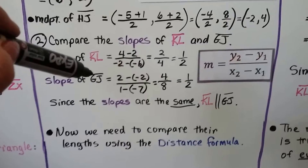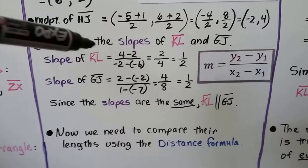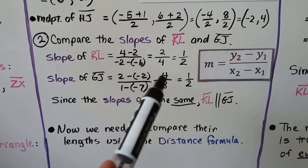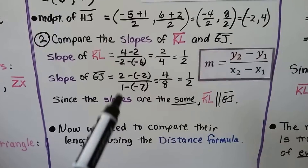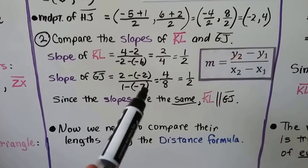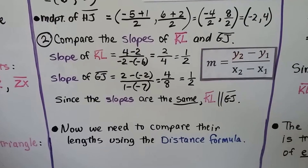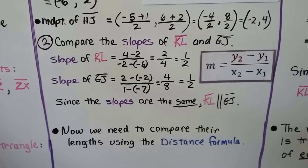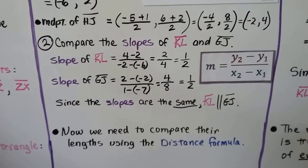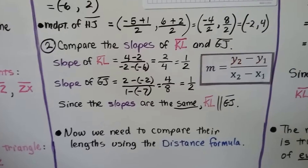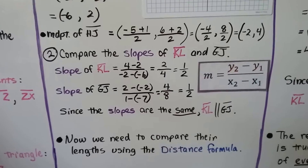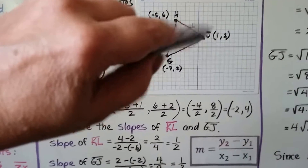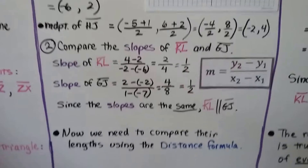We end up with a slope of one-half. The slope of segment GJ is 2 minus negative 2, which gives us 2 plus 2, that's 4. And 1 minus negative 7, which is 1 plus 7, that's 8. Again, we have one-half. Since the slopes are the same, segment KL is parallel to segment GJ — they have the same slope.